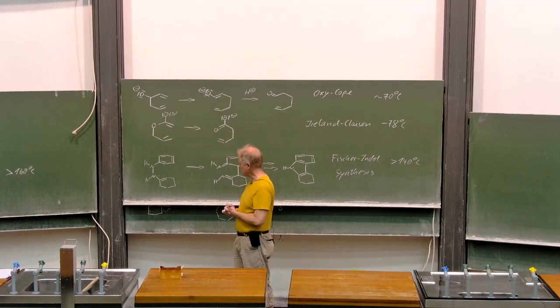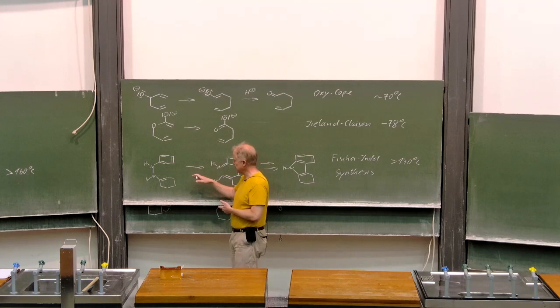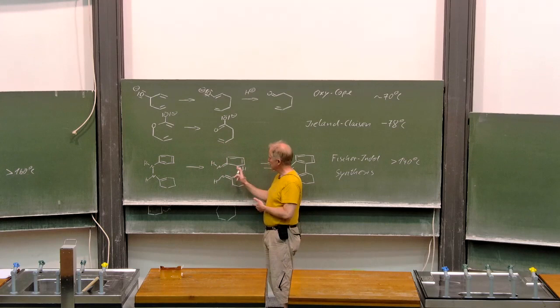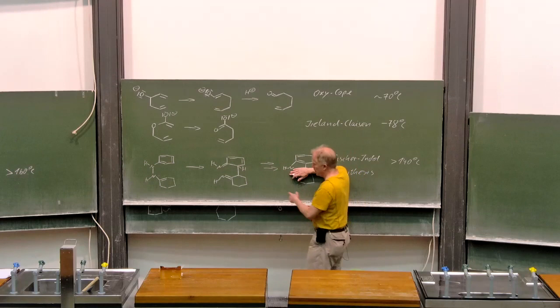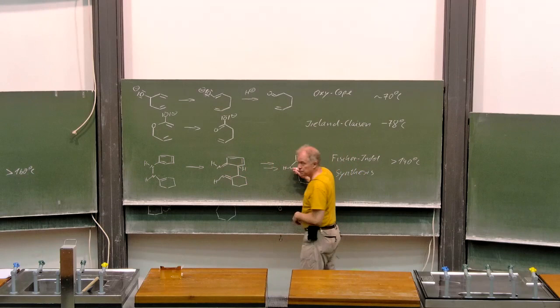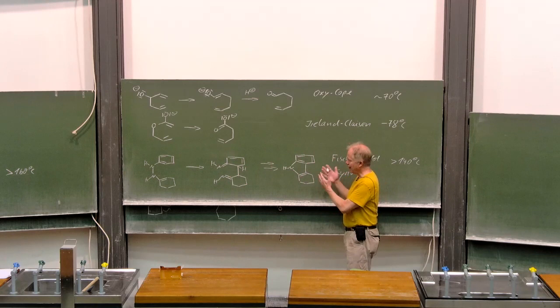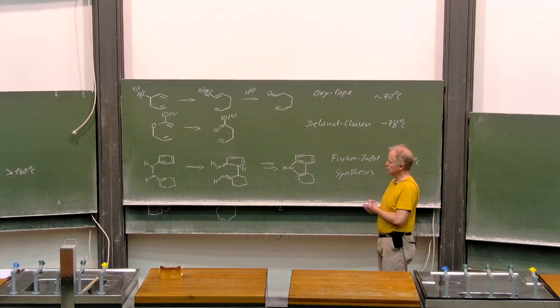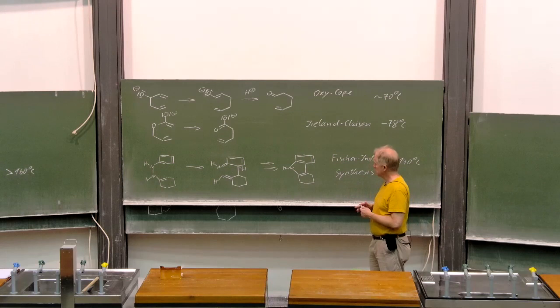At about 140 degrees, a rearrangement can take place again under de-aromatization. Imine-enamine tautomeri will lead us back to the aromatic system and it's then an aniline which will condensate with the imine and finally you end up with this structure. It is an annelated indole. And what we have here is the Fischer indole synthesis. So, the diazacope rearrangement is the key step within the indole, Fischer indole synthesis.